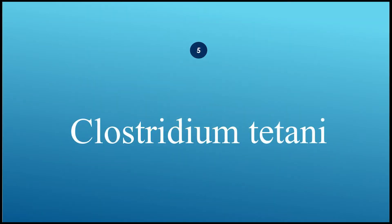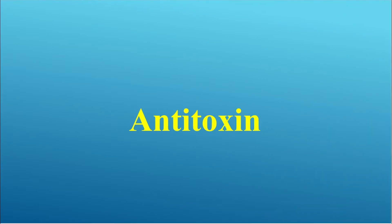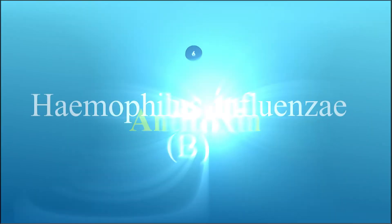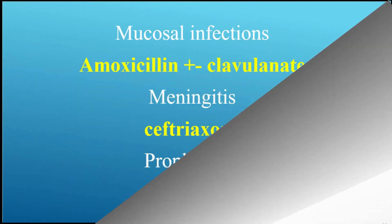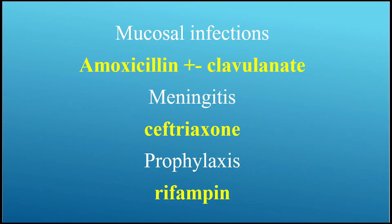How do you treat Clostridium tetani? Also use antitoxin. What are the treatments of Haemophilus influenzae B? For mucosal infections, use amoxicillin and/or clavulanate. For meningitis, use ceftriaxone.